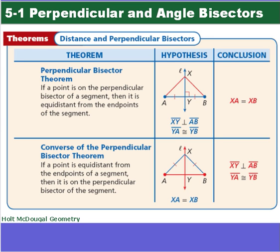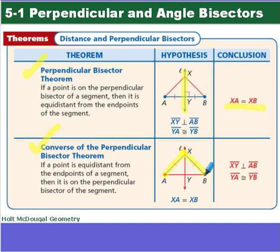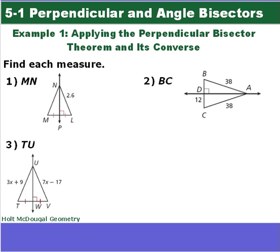So we have two theorems. The first is the perpendicular bisector theorem, and it states: if a point is on a perpendicular bisector of a segment, then it is equidistant from the endpoints of the segment. Our conclusion is that segment XA is equal to segment XB. And the converse: if two segments are congruent, we know it's going to be a perpendicular bisector to the segment and those segments are going to be congruent.